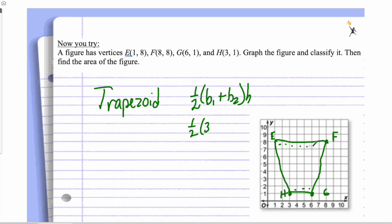So I can find all these things. So one half of 3. 1, 2, 3 for my base 1. 1, 2, 3, 4, 5, 6, 7 for base 2. My height is 1, 1, 2, 3, 4, 5, 6, 7. So half of, so one half of 3 plus 7 is 10. Half of 10 is 5. 5 times 7 is 35 units squared. So we can see how we work these problems.